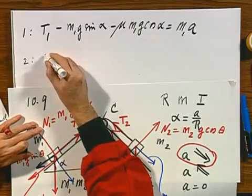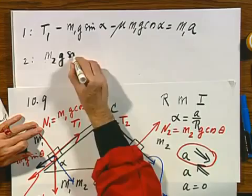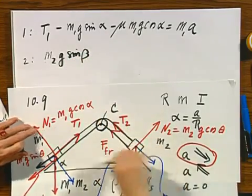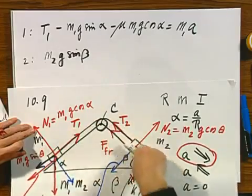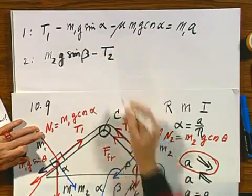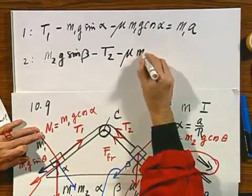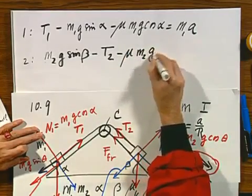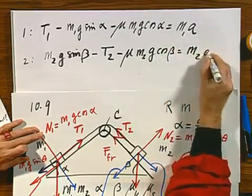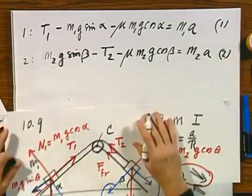For object number two, m2 g sine beta, this is the positive direction. All the other forces are negative. T2 is up, so that's negative. Minus mu times m2 g cosine beta equals m2 times a. This is my equation number one. This is my equation number two.